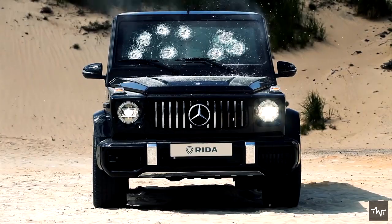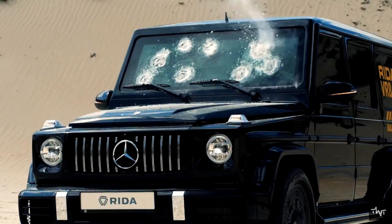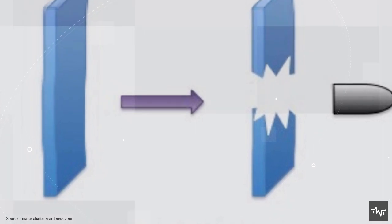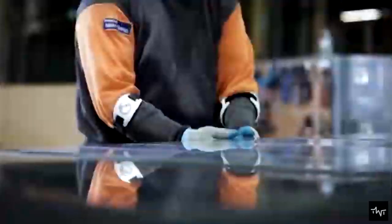Ordinary glass shatters in radiating fractures from the point of entry of a bullet, and the glass does nothing to slow the momentum of the projectile. In fact, the glass shards resulting from a bullet entry can be as deadly as the bullet itself.